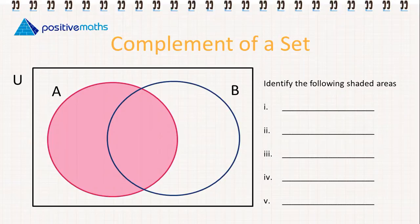For the next activity, we have to identify the shaded areas. So the first shaded area, this is the set A.